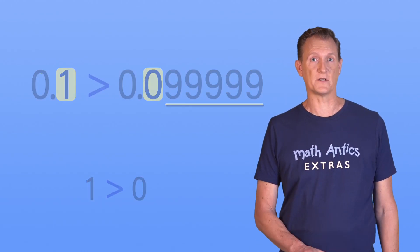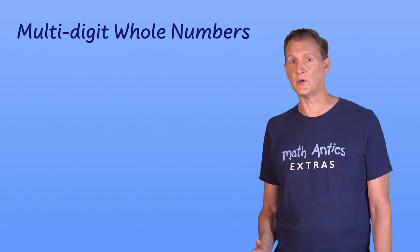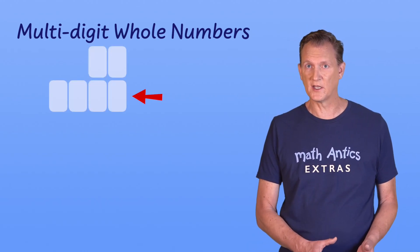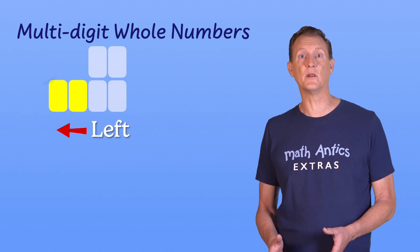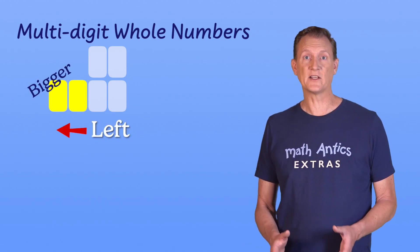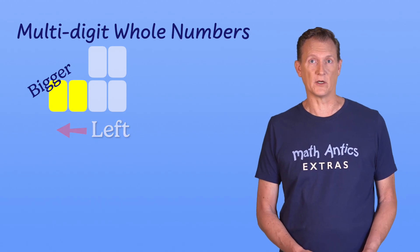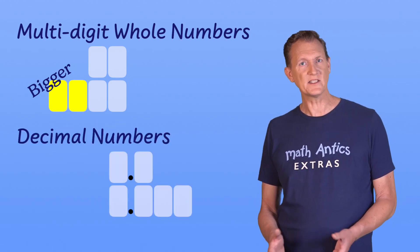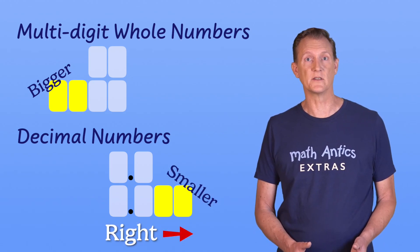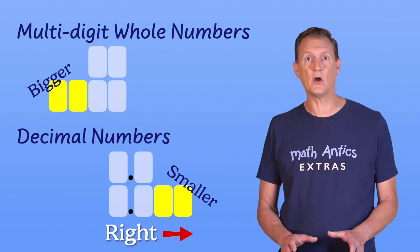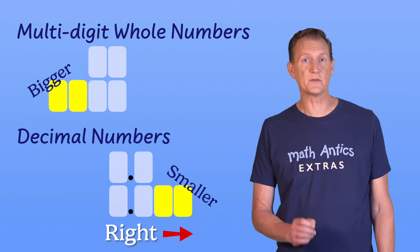And here's the difference. With multi-digit whole numbers, if one of the numbers you're comparing has more digits, those extra digits are always to the left, which means they're always in the bigger number places. That's why they automatically make the number bigger. But when a number has more decimal digits, those extra digits are always to the right, which means they're in smaller number places. So no matter how many of them there are, they can only make a very small difference.